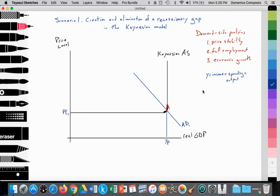Full potential GDP assumes full employment. So at YP, we're at full potential. We are fully employing our inputs, and we are at full employment.